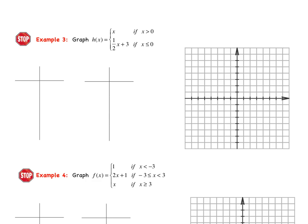Hopefully you were able to give it a try. For the first function, our two tables have x greater than 0 and x less than or equal to 0, with functions x and one-half x plus 3. The table for x greater than 0 includes 0 with an open circle, plus points 1 and 2. When x is 0, h of x is 0; when x is 1, h of x is 1; when x is 2, h of x is 2. The graph follows with an open circle at (0, 0) through points (1,1) and (2,2).